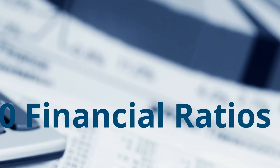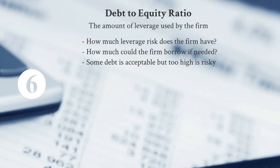Number six on our list is the Debt-to-Equity ratio, which looks at the leverage of the firm — how much debt they're using to achieve their results. Key questions it answers: how much leverage risk is there, is debt-to-equity high or low compared to industry peers, and how much could the firm still borrow if needed? A very high ratio may make lenders reluctant to extend additional credit.